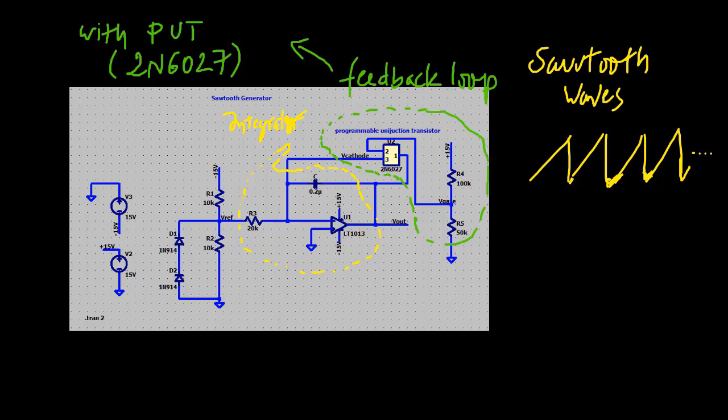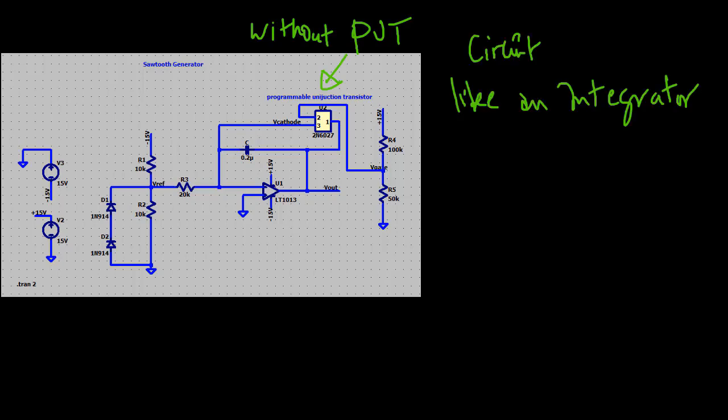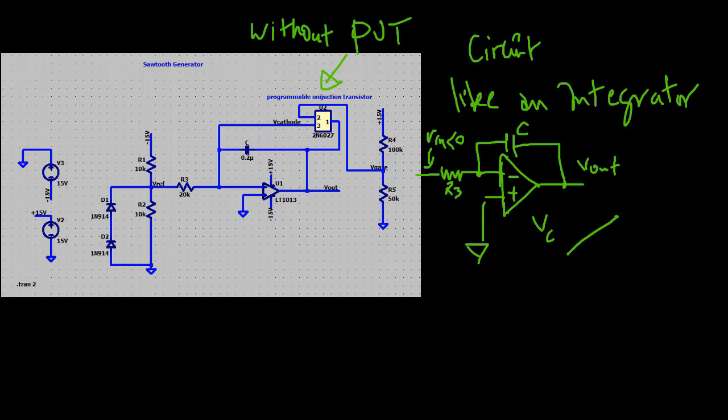Let me explain how this circuit works. Let's initially pretend the circuit shown here does not contain the PUT. In this case, the circuit would resemble a simple integrator circuit. When a negative voltage is placed at the inverting input, the capacitor charges up at a linear rate toward the positive saturation voltage plus 15 volts. The output signal would simply provide a one-shot ramp voltage.